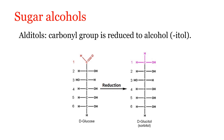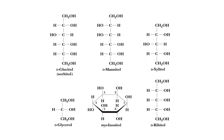When fructose is reduced, we also get sorbitol. When mannose is reduced, we get mannitol. When xylose is reduced, we get xylitol. From ribose, we get ribitol and myoinositol. Myoinositol is also a reduction product of glucose, and it is an important chemical messenger in our body — it is involved in the regulation of hormonal activities and acts as a second messenger. From glyceraldehyde, we get glycerol.